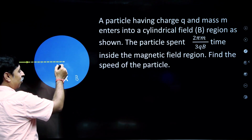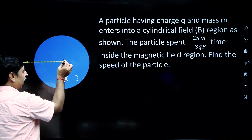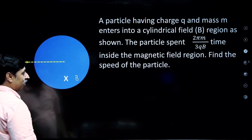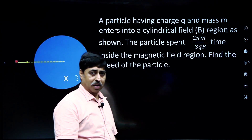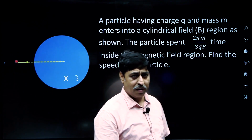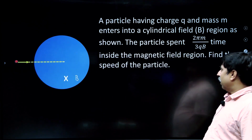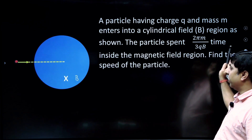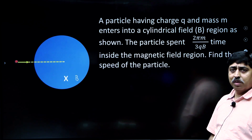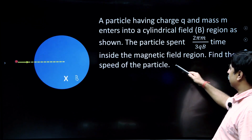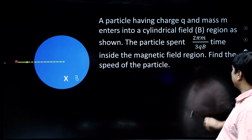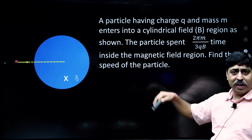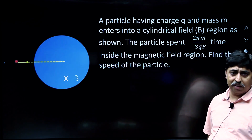This is the center point of the blue circle, this is the axis of the cylindrical region. The charged particle enters into this region with some speed, and the question says the particle spent 2πm/3qB time inside the magnetic field. After this much time the particle exits the magnetic field region. Find the speed of the particle.